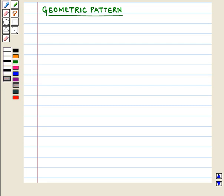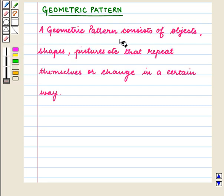Now we discuss geometric patterns. A geometric pattern consists of objects, shapes, pictures, etc. that repeat themselves or change in a certain way.